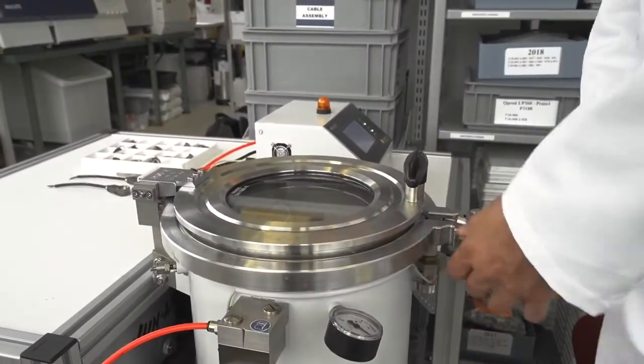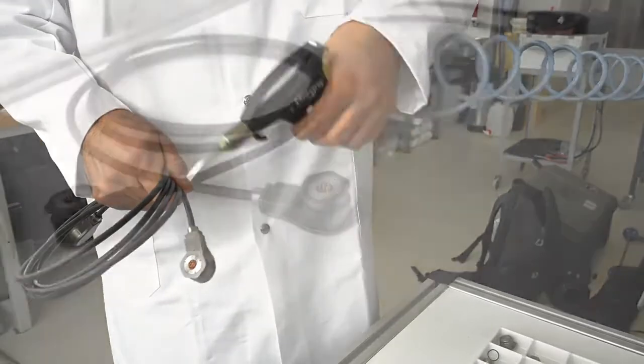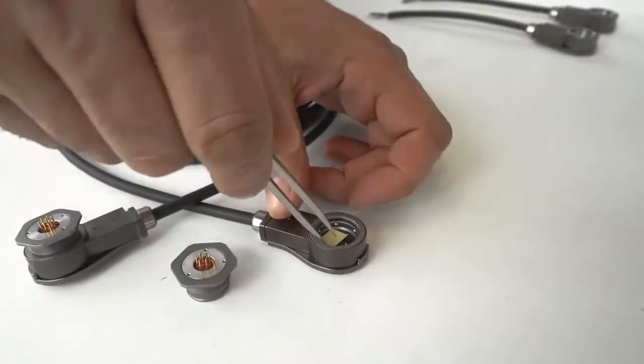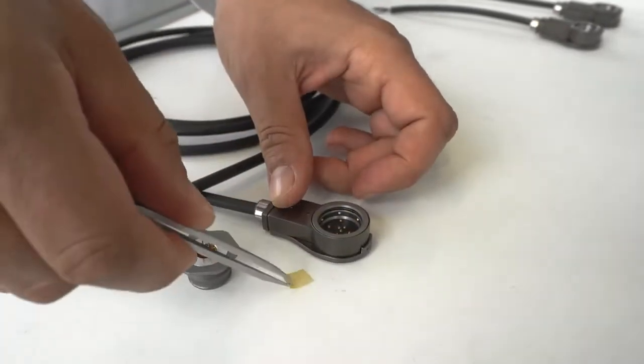After 24 hours of continuous immersion, the connectors are removed from the pressure vessel and unmated. No color change can be seen on the pH indicator paper, which indicates that no water has penetrated the connector's housings.